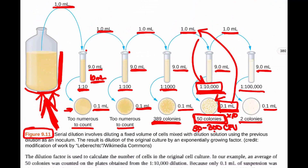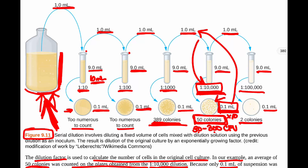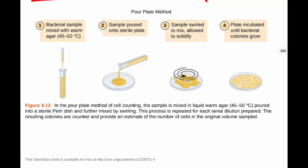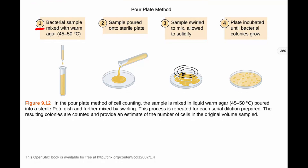The pour plate method involves taking the bacterial sample — that 0.1 mL pulled from a dilution tube — and mixing it with warm agar in a tube. The agar is warm enough to stay liquid but not so hot as to kill the bacteria. After mixing by rolling the tube between hands, the agar is poured into a sterile plate, swirled to cover the entire surface, and then incubated until colonies are visible. Colonies can grow both on the surface and embedded within the agar.